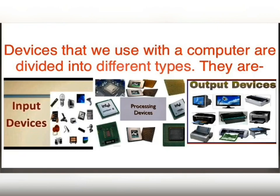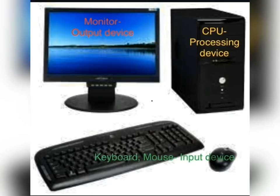The types are: number 1, input devices; number 2, processing devices; and number 3, output devices. These are the main parts of a computer. Monitor is an output device. CPU is a processing device. And keyboard and mouse are input devices. Now we will also study some other devices and know whether they are input, output, or processing devices.